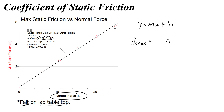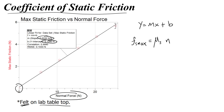The y-intercept in this case is very, very small, and we can treat it as basically zero. The slope we call the coefficient of friction — specifically we would call this mu s, for the coefficient of static friction.